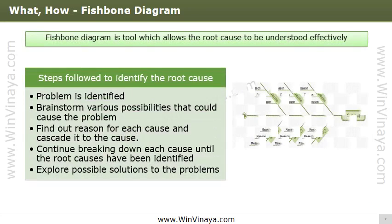Let's discuss the steps involved in creating and analyzing a fishbone diagram. The effect — usually the problem that needs to be resolved — is placed at the fish head. The causes of the effect are then laid out along the bones, and different reasons for each cause are cascaded along the branches, as shown in the figure. Step one: identify and clearly define the problem or effect to be analyzed.